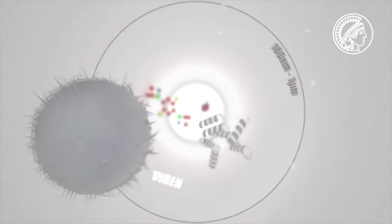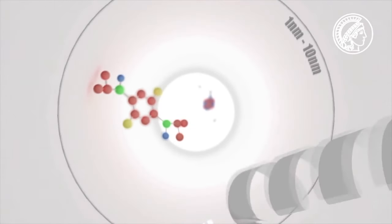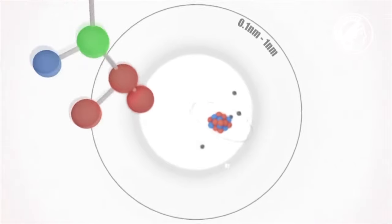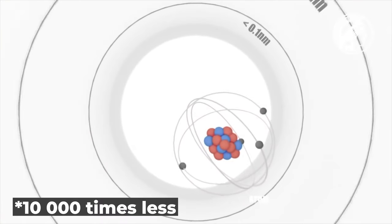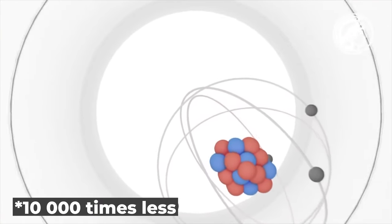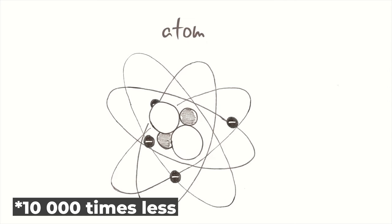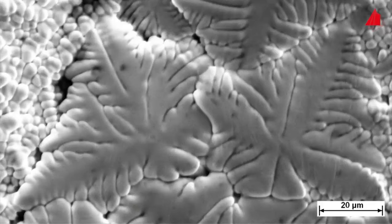The wavelength of electrons accelerated in an electric field is approximately 0.4 angstroms, or 0.04 nanometers. That's 10 times less than what visible light has. By the way, if you didn't know, the size of a hydrogen atom is just about 1 angstrom. So let's find out what's so cool about electron microscopes.